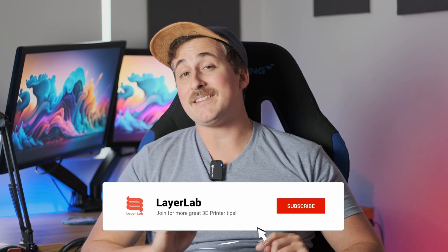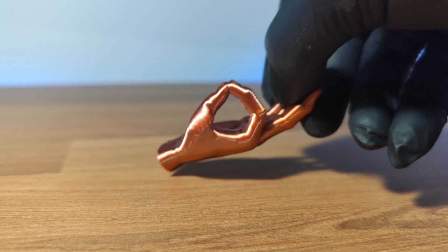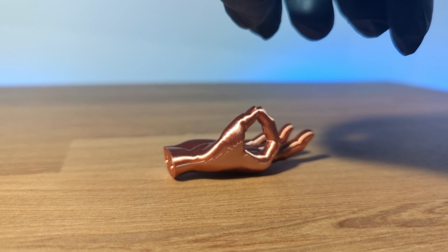But it doesn't come without its own set of challenges. Printing diagonally causes the center mass to change, meaning that we're going to have to figure out how to get the model to stay perfectly still throughout the entire printing process without falling over. There are a bunch of methods that you could use to do this, but here's one that I find works well.